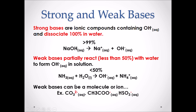Weak bases can be a molecule or an ion. Most weak bases are an anion, meaning they have a negative charge. That negative charge represents that they can gain a positive charge — they can gain a hydrogen. In all of our other examples, we have a negative charge on each one of the molecules.